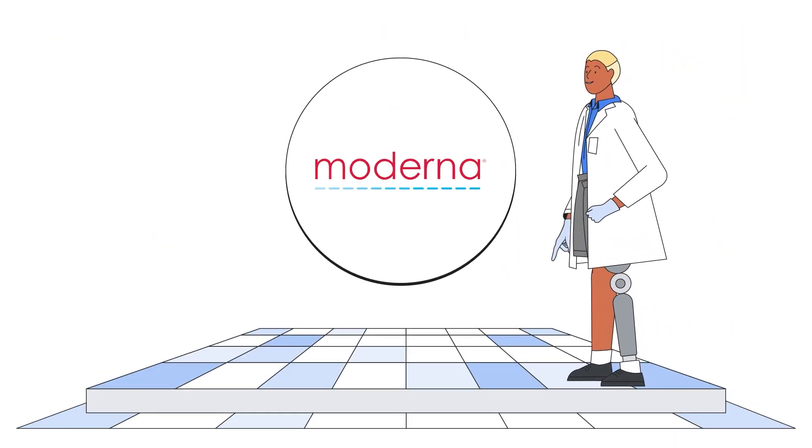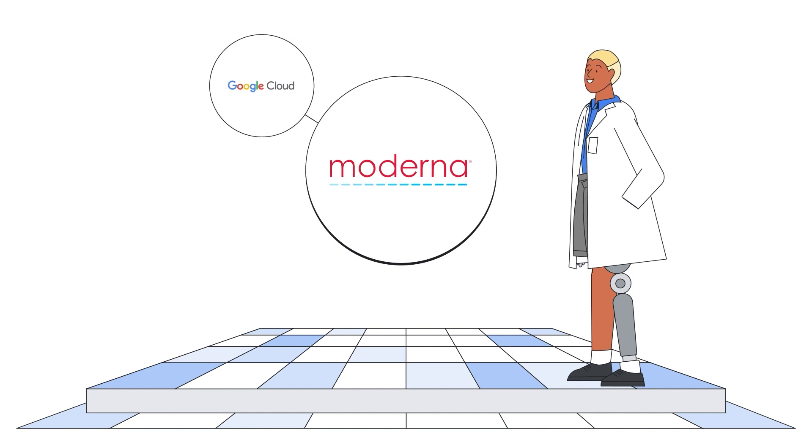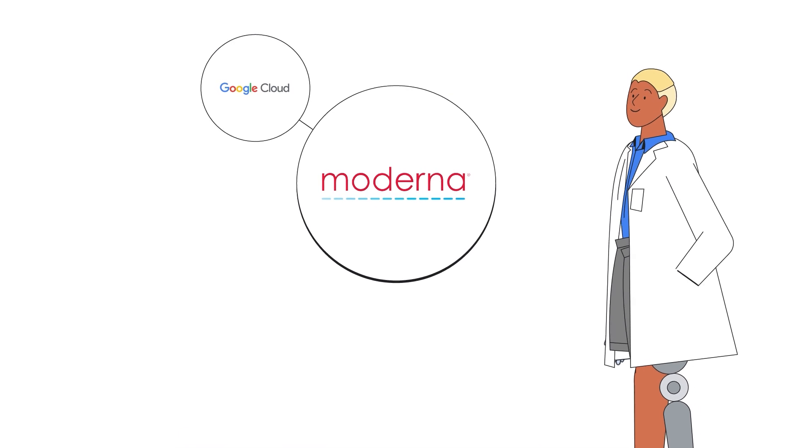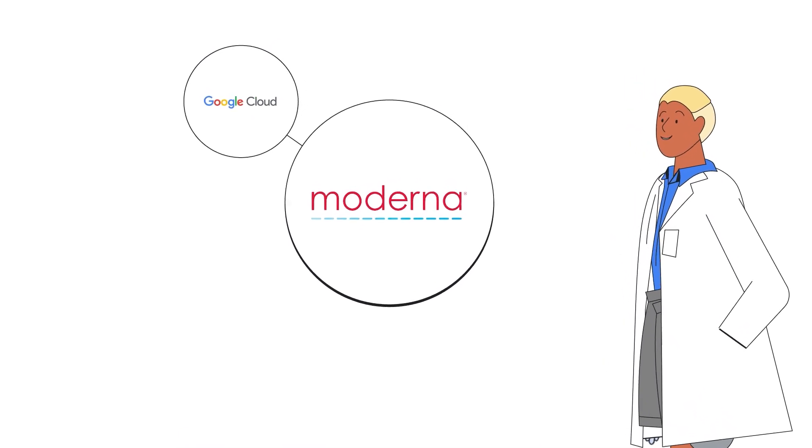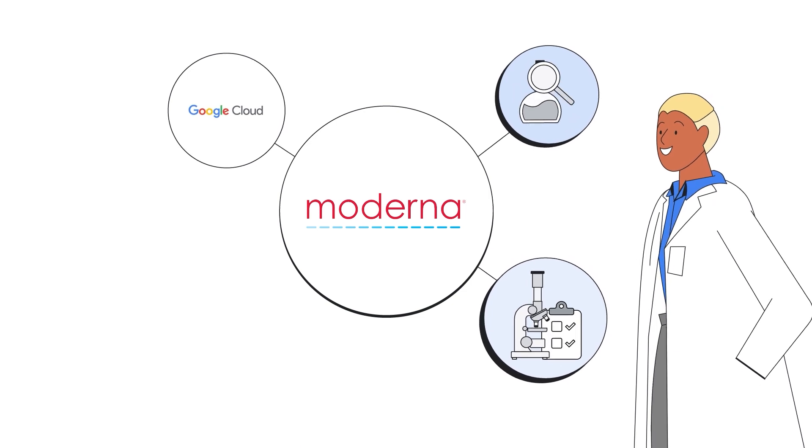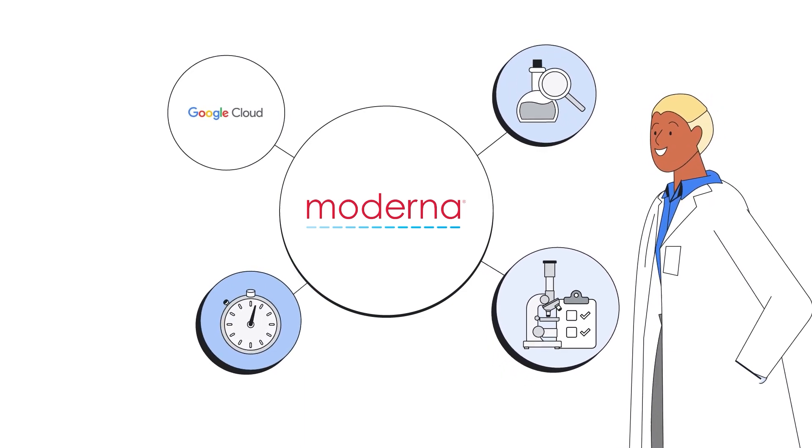American pharmaceutical company Moderna used Google Cloud for its multi-cloud data strategy. By integrating internal and external data sets, they gained a more complete view of clinical trials, increased scientific efficiency and collaboration, and sped up decision-making.